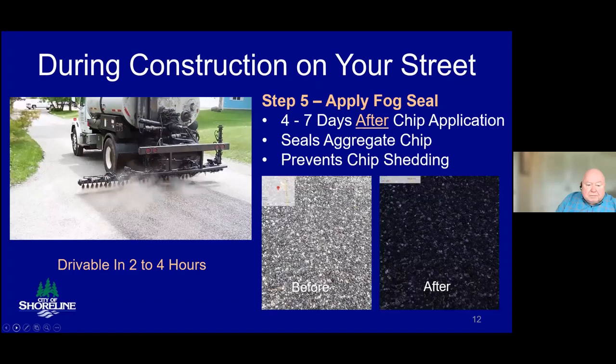About four to seven days after the BST is placed, the contractor will come back, place no-parking signs, and notify you that the fog seal will be applied to the road surface. Fog seal placement on a street shouldn't take longer than a couple of hours. It's just diluted asphalt cement, diluted with water while still warm, so you want to stay off of it. It cools in about two to four hours. Fog seal seals the aggregate chip and prevents chips from shedding out of the new surface.